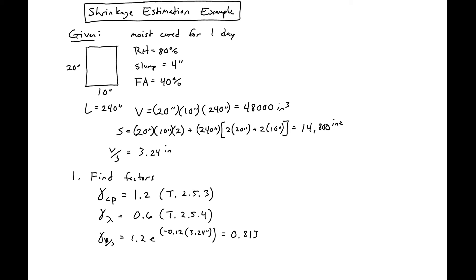The factor taking into account the slump is 0.89 plus 0.041 times 4 inches, which equals 1.054.